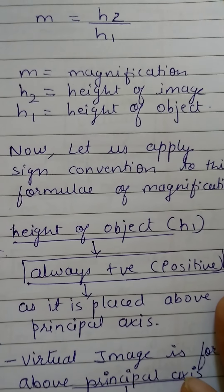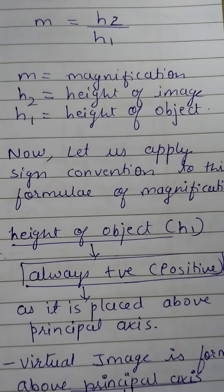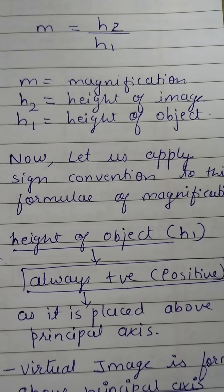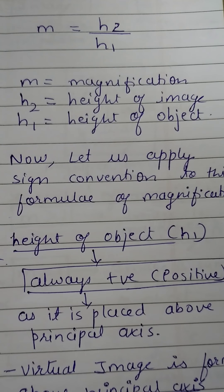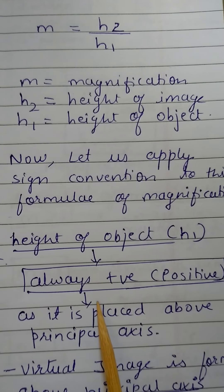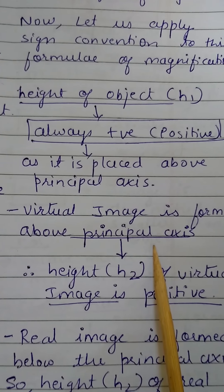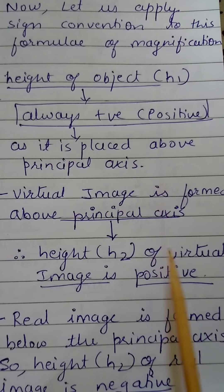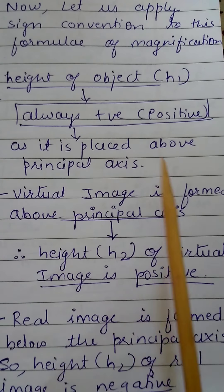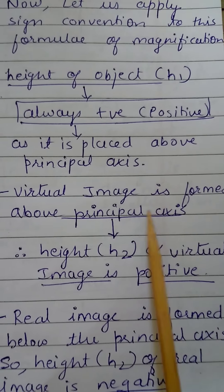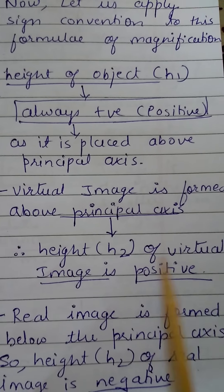Now let us apply the sign convention to the mirror formula. Sign convention rules remain the same, which I have discussed in my sign convention video — you can refer to the Grade 10 physics playlist. The height of the object H1 is always positive because it is kept above the principal axis. As it is placed above the principal axis, a virtual image is formed above the principal axis, so H2, the height of the virtual image, will always be positive.